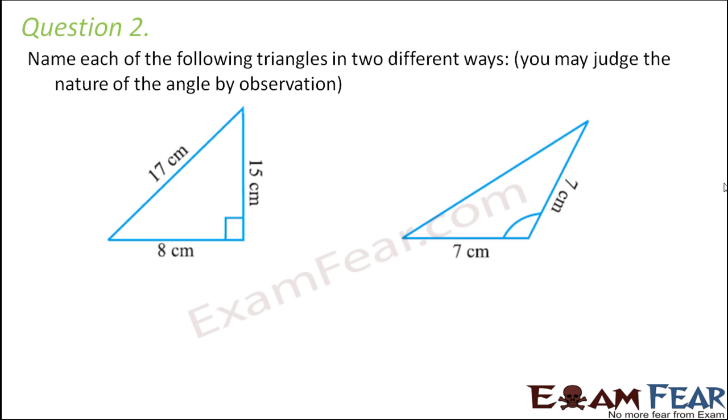Question number two. Name each of the following triangles in two different ways. You may judge the nature of the angle by observation.